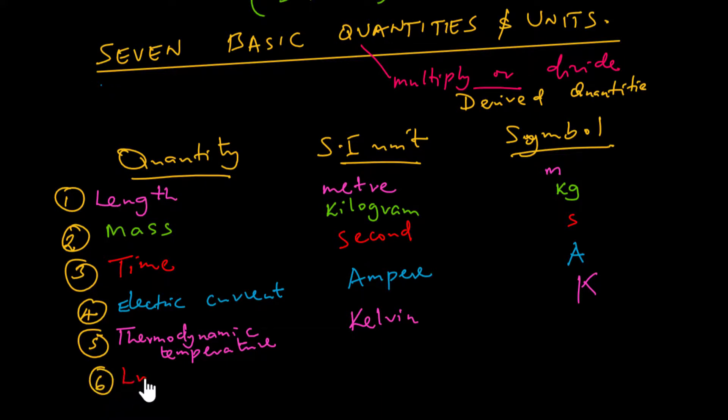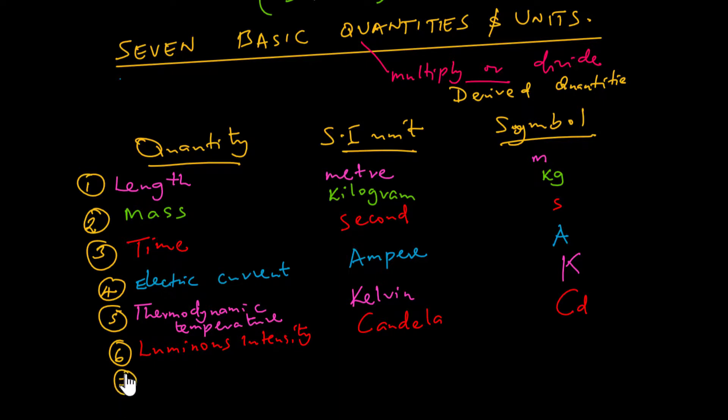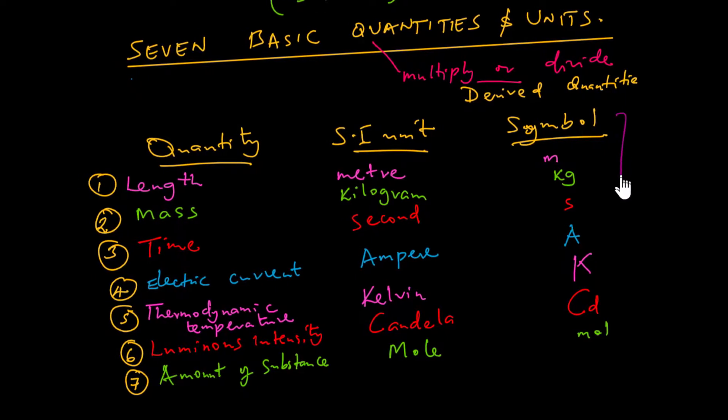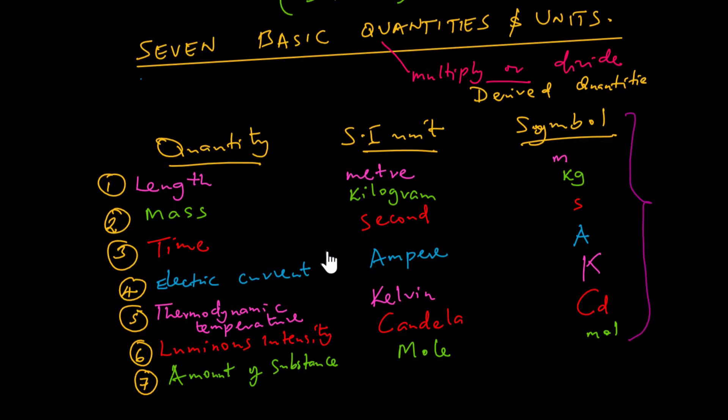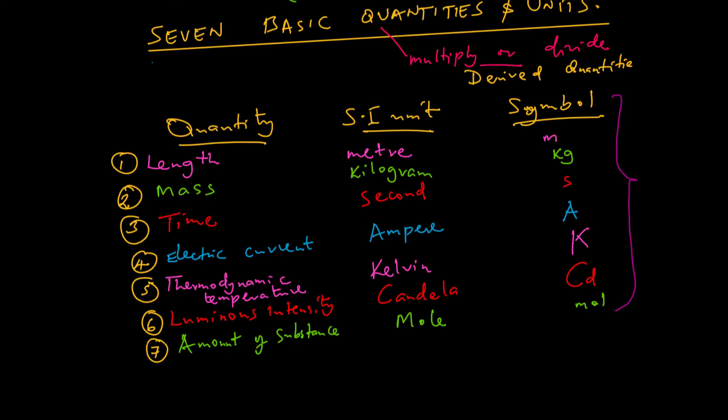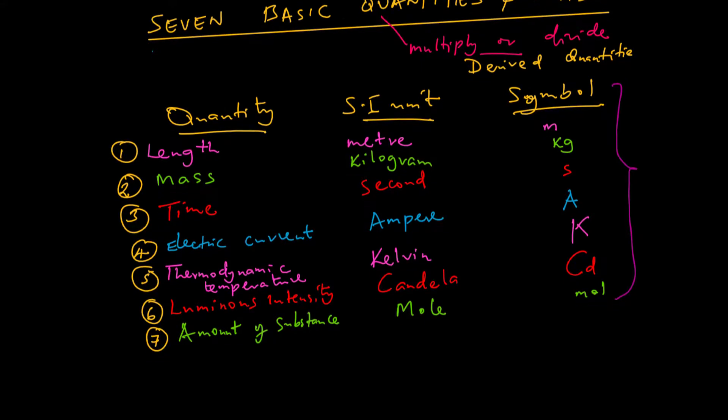Number six is luminous intensity. The SI unit is candela, and the symbol is capital C-D. Number seven, and the last one, is the amount of substance. The SI unit is mole, symbolized as mol with M-O-L, all of them written in small letters. So those are the seven basic quantities that were agreed upon in 1960 to form the International System of Units, known as SI units.